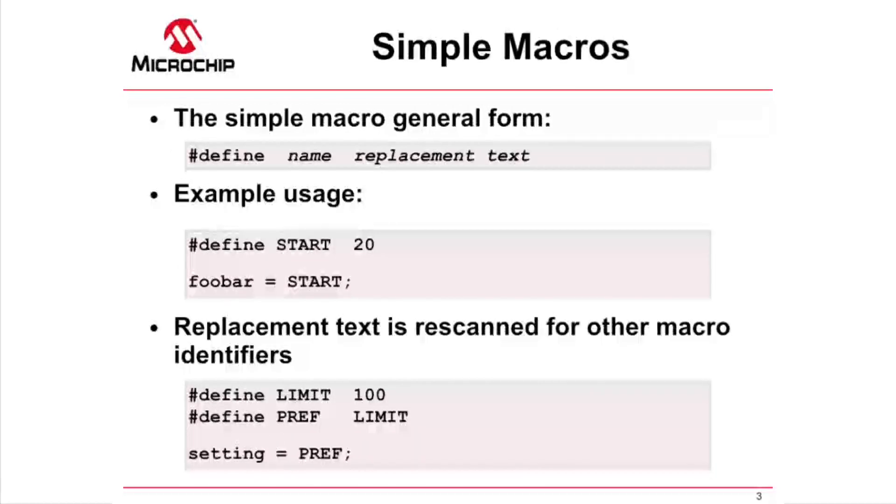First, a quick revision of basic macro expansion. A preprocessor macro definition in its simplest form is shown at the top of this slide. It replaces every instance of the token name with the replacement text. So in the example immediately below, the variable foobar is assigned the value 20.